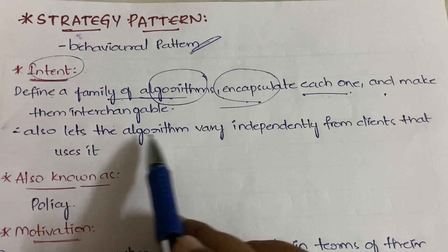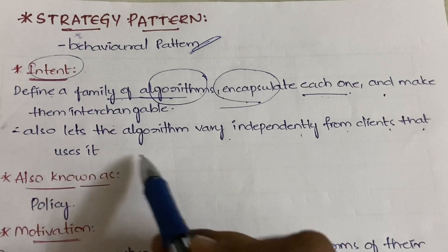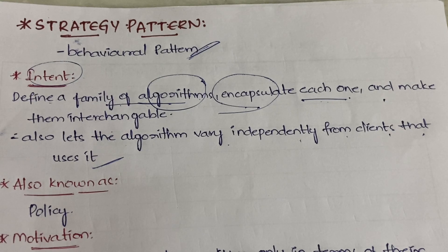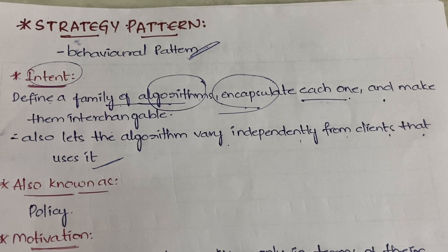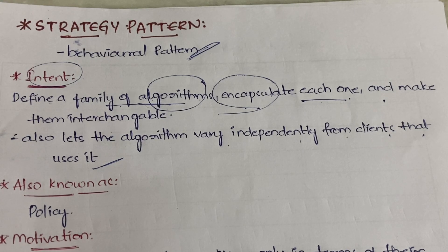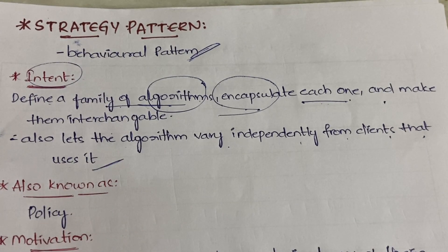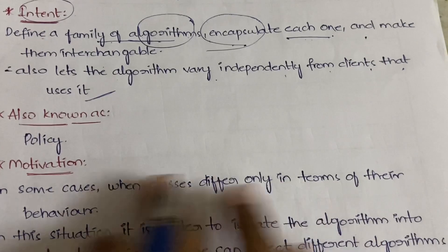It will also let the algorithm vary independently from the clients that use it. For example, if we take Amazon — how many clients does it have? It has so many customers, and each customer will have different choices. So according to the choice of each customer, it is not possible to define a new algorithm each time. What it will do is define a generalized algorithm that will vary independently from the clients that use it, according to the purpose of each client. This is also known as Policy.